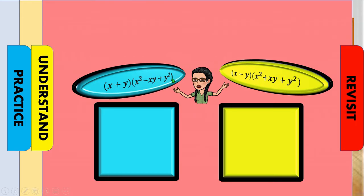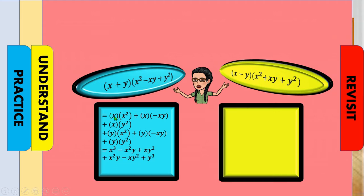Distribute x to x squared, to negative xy, to y squared, and then y to x squared, to negative xy, then to y squared. So x times x squared is x cubed, x times negative xy is negative x squared y, and x times y squared is xy squared. Continuing: y times x squared is x squared y, y times negative xy is negative xy squared.